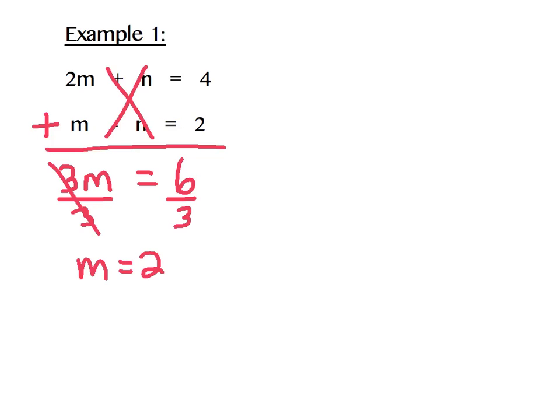Step 4 says substitute the value found into one of the equations to find the other variable. So since we know m, we are going to substitute 2 in place of m in one of our equations so we can find n. I am going to substitute into the first equation 2m plus n equals 4. I know that my m value is 2.